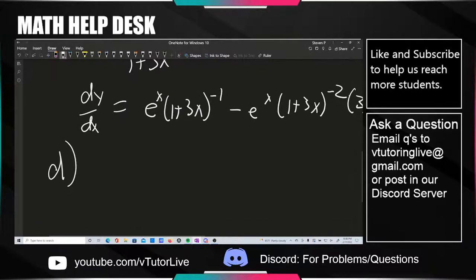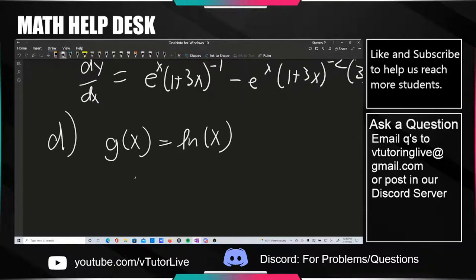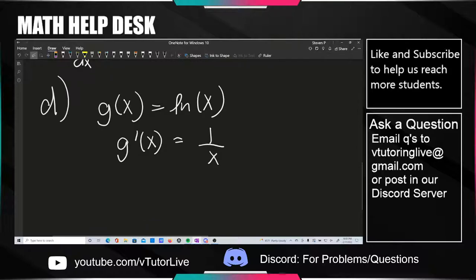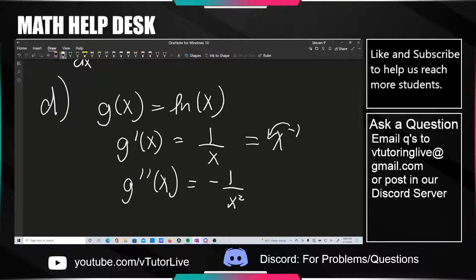Any questions so far? For this one, just apply a single derivative. Ln of x is just one of the most common derivatives you need to know — it's just 1 over x. Taking two derivatives, you get minus 1 over x squared. This is just the power rule — you can think of this as x to the minus 1, bump down the minus 1 and subtract another 1 from the exponent, which is how you get to minus x to the minus 2.